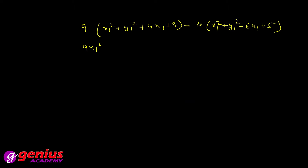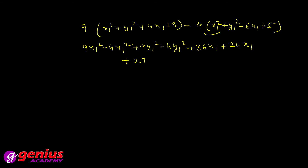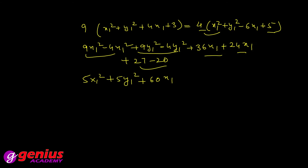Now grouping like variables together: 9X1² − 4X1², plus 9Y1² − 4Y1², plus 36X1 + 24X1, plus 27 − 20, equal to 0. This simplifies to 5X1² + 5Y1² + 60X1 + 7 equal to 0. Everything is shifted to one side, equal to 0.